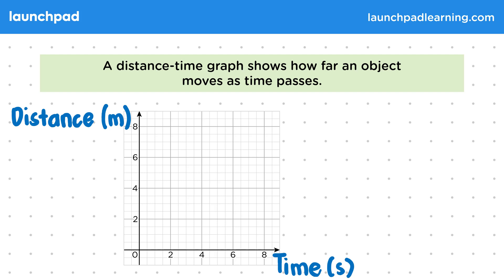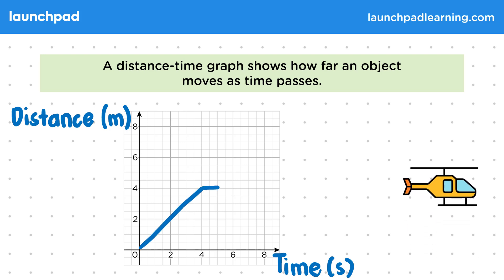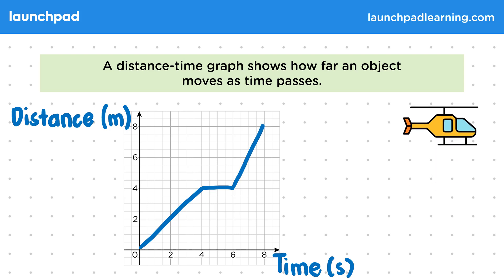Let's look at an example of a helicopter rising into the air. As the helicopter moves, let's use the graph to record how far it's travelled off the ground. First, the helicopter rises slowly. It then stays at the same height for a few seconds and then rises quickly. As you can see, we used the graph to keep a record of the height as the helicopter rose.